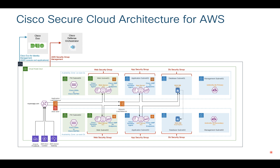Another important thing is how you will micro-segment your workloads. There is a service known as AWS security groups — you can see in this diagram we have applied security groups to instances. These security groups are applied directly to the instances and can be controlled by Cisco Defense Orchestrator (CDO). CDO is a cloud offering where you can onboard your VPC and manage your security groups directly from CDO. If you have a large deployment with multiple VPCs, it becomes difficult to manage security groups from the AWS console. CDO gives you the flexibility to manage multiple security groups, check for duplication, and copy groups.